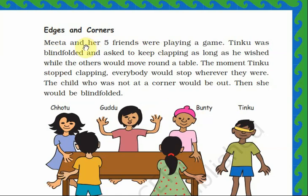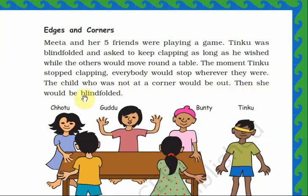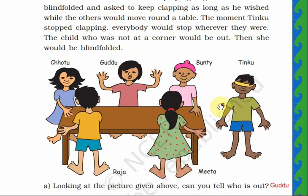Edges and Corners. Meeta and her five friends were playing a game. Tingu was blindfolded and asked to keep clapping as long as he wished, while the others would move around a table. The moment Tingu stopped clapping, everybody would stop wherever they were. The child who was not at a corner would be out. This is a game to understand about edges and corners.